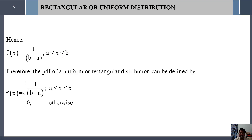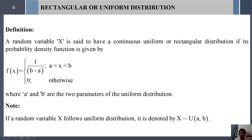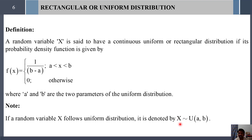Therefore we can define f(x) = 1/(b - a) for x between a and b, and 0 otherwise. So a random variable X is said to follow a uniform or rectangular distribution with this probability density function. The mathematical notation for uniform distribution is X ~ U(a, b), where the tilde symbol denotes 'follows'.